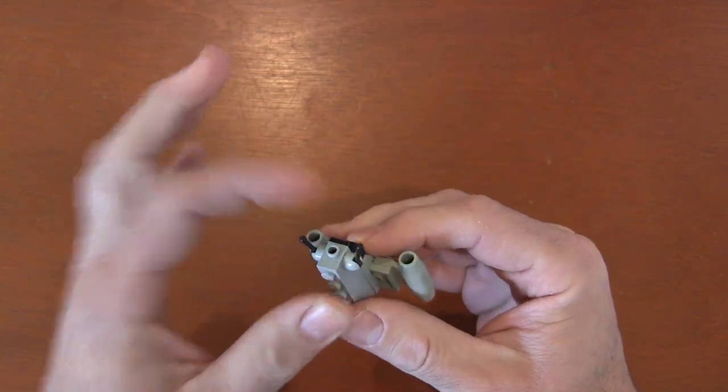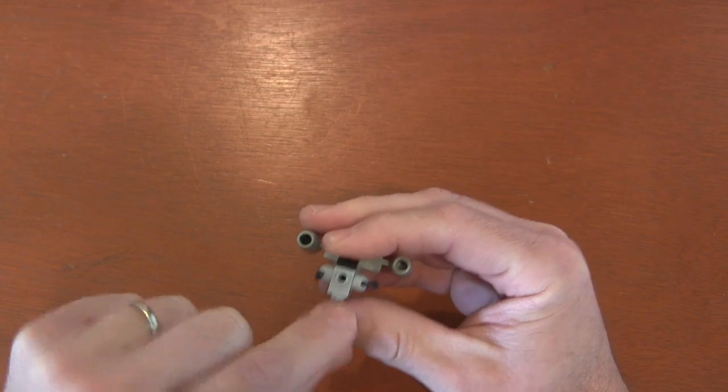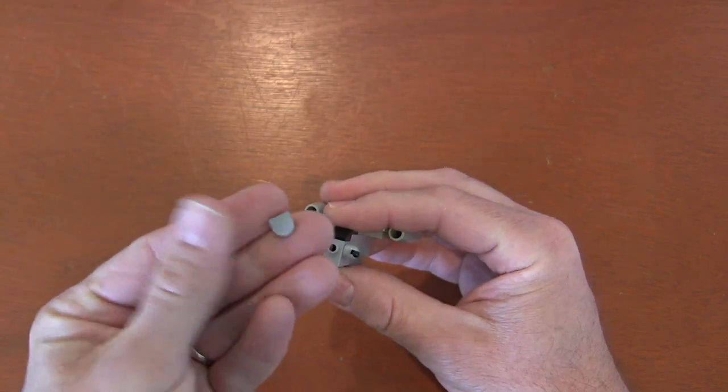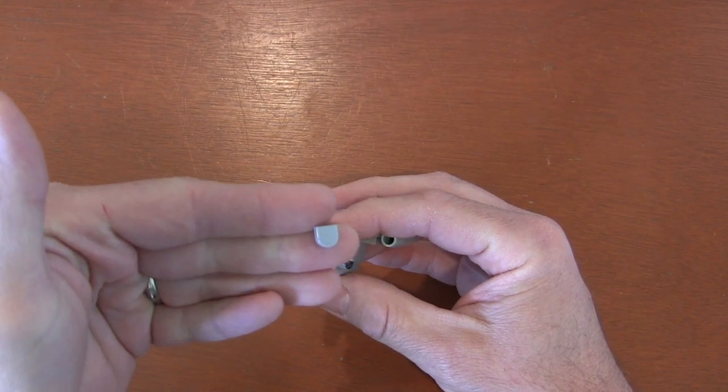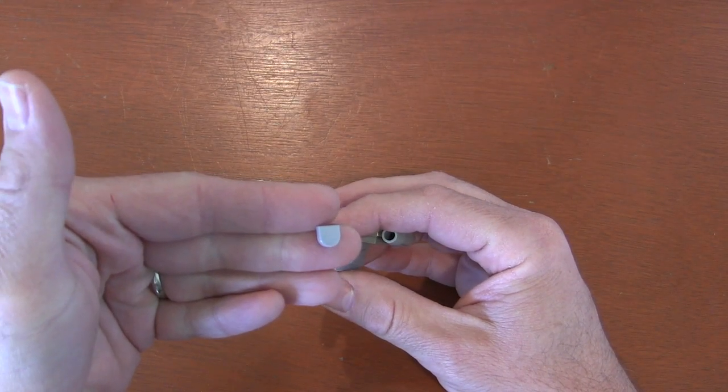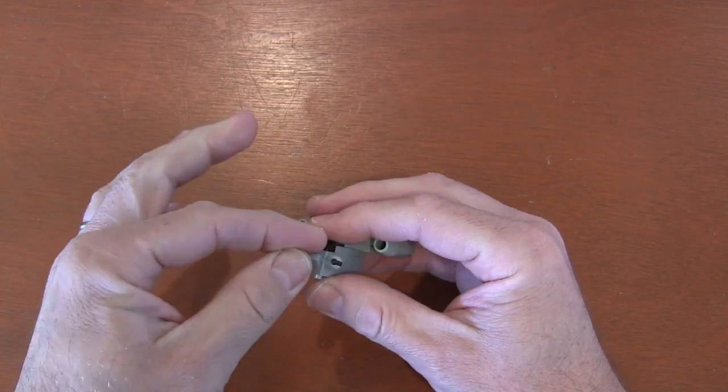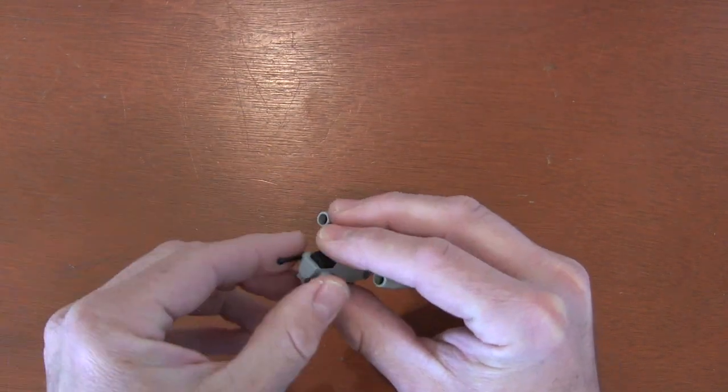And then the only thing left is the front here. I don't like that open stud here. And so to make that kind of flat front nose, I'm going to get a 1x1 tile, kind of like a half circle extended. And put it so that the flat part is on top and that curved part is on bottom. And put it on that front stud to kind of finish off our Razor Crest here.